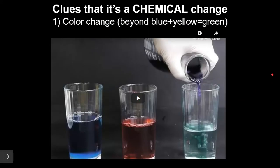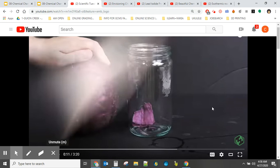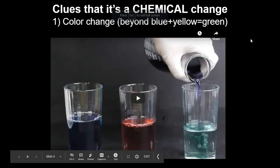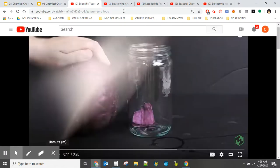So clues that there's a chemical change — there's nothing that's 100% going to tell you, but there are some reasonable clues. I'm going to show you some examples on YouTube. The first clue is color change. Now when I say color change, I don't mean blue plus yellow equals green — that's not a chemical change, because there you're just seeing the two colors at the same time and the colors themselves have not changed. I'm talking about something like this.